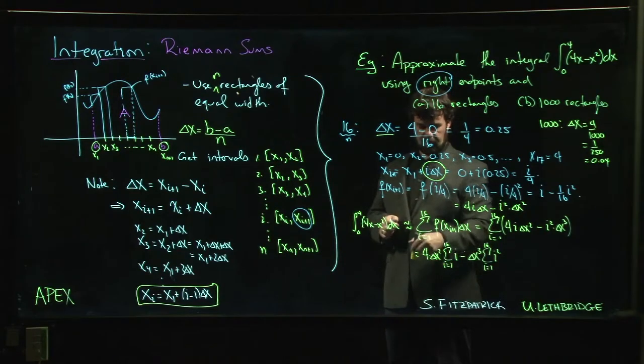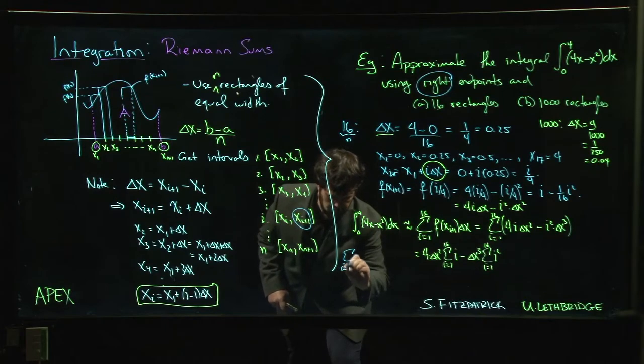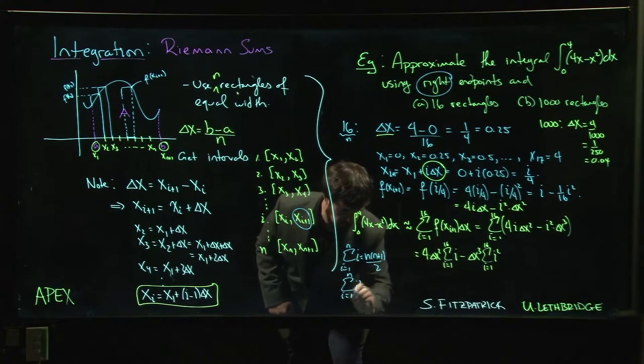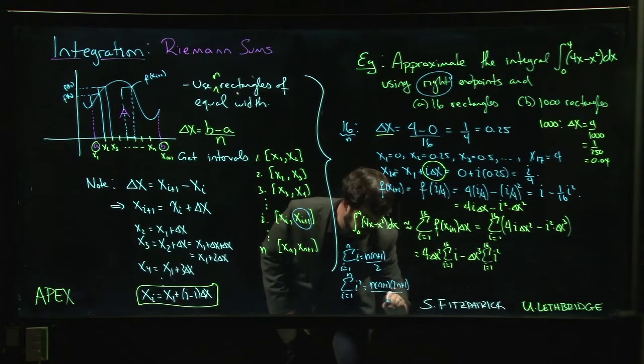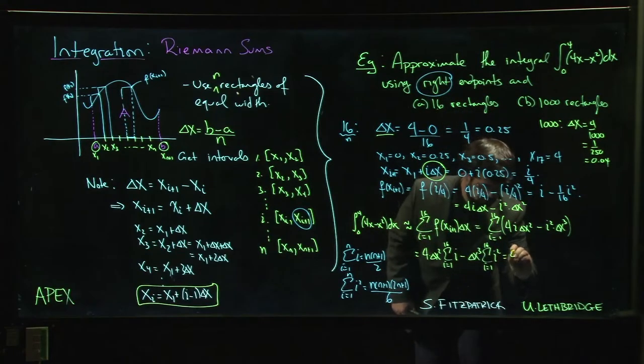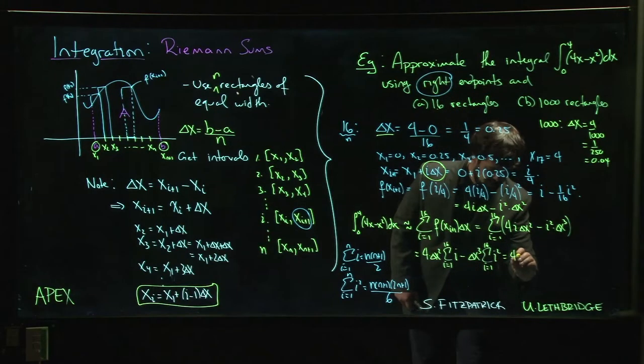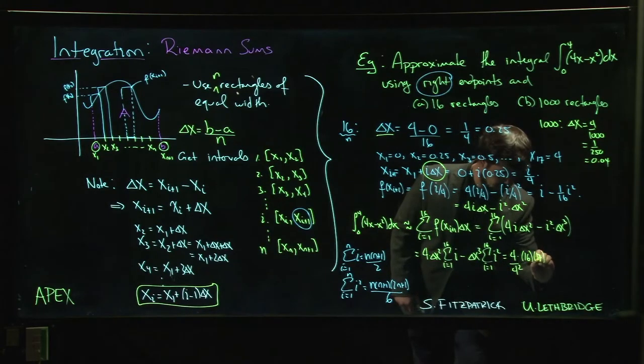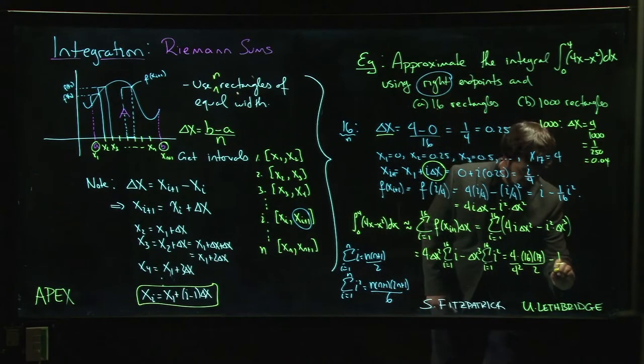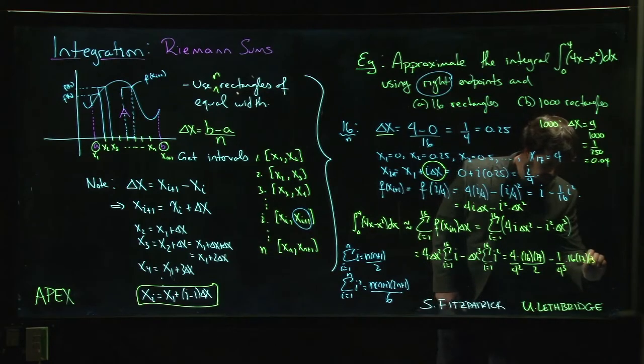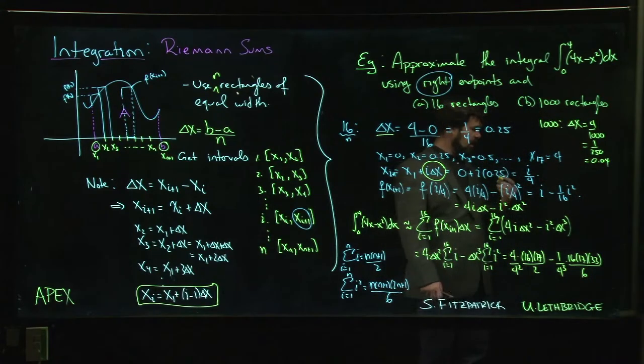We have these summation formulas. Remember that the sum of i from 1 to n is n(n+1)/2. For i squared, it's n(n+1)(2n+1)/6. So we plug that in: 4 times (4/4)^2 times 16 times 17 over 2, and then we subtract off 1 over 4 cubed times 16 times 17 times 33 over 6.